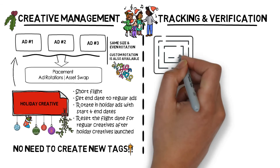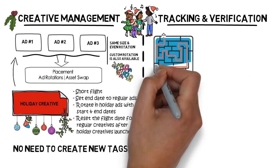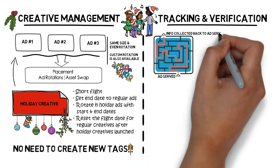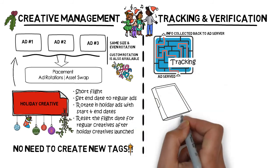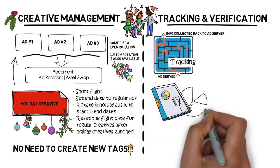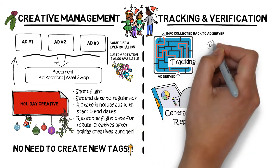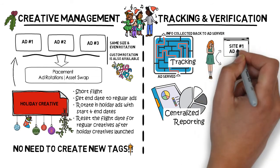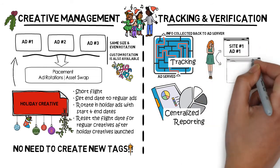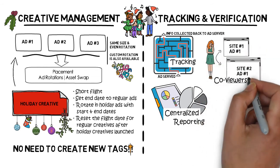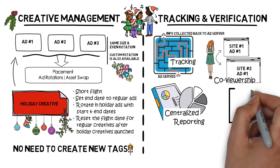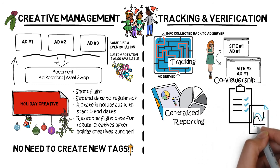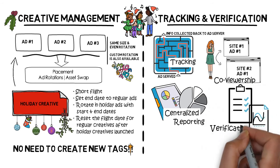Tracking and verification: ad servers help advertisers track their ads as they appear on the web. This not only allows centralized reporting measures to reach of a campaign while taking into account cross viewership across publishers, but also helps advertisers verify the basic reporting metrics provided by publishers.